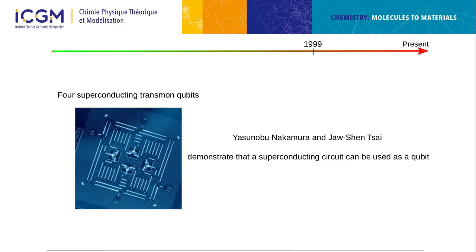Nakamura and Tsai demonstrated that a superconducting circuit can be used as a qubit. This is now the most well-known experimental realization of quantum computers, used by Google and IBM.